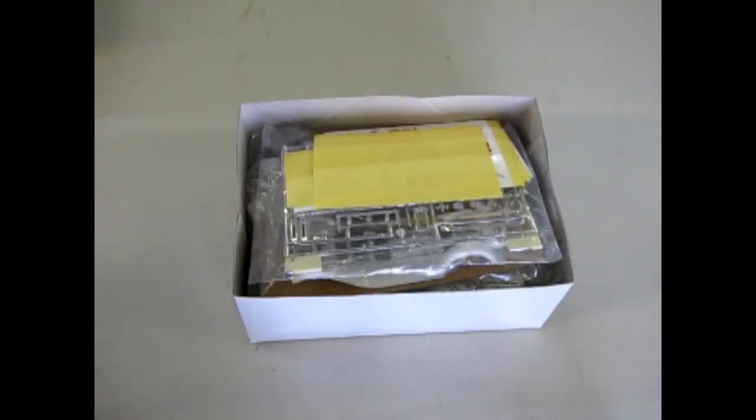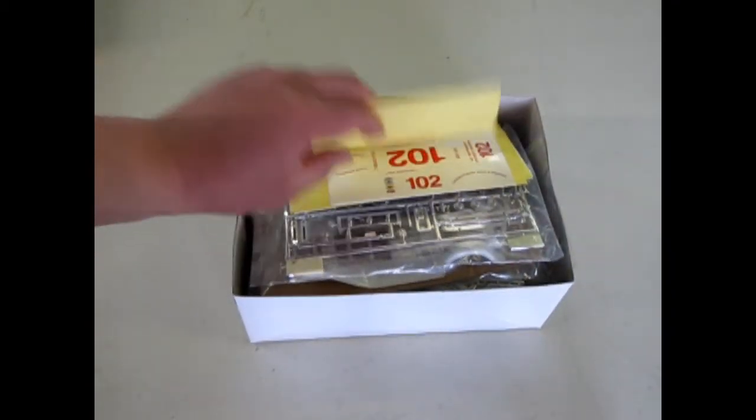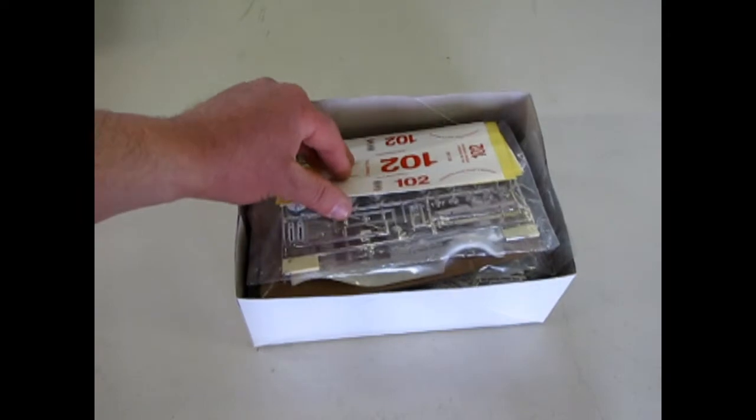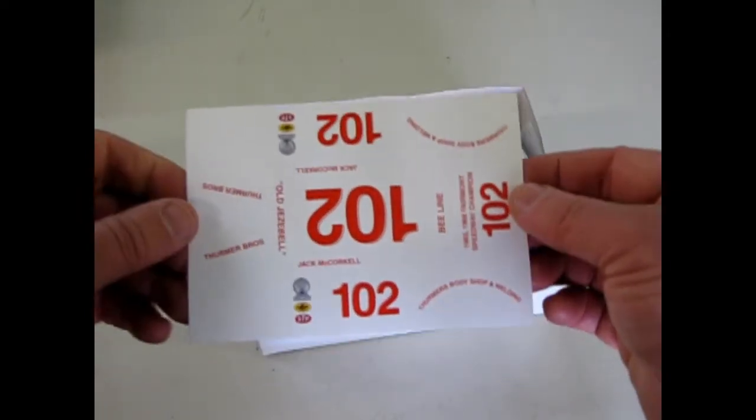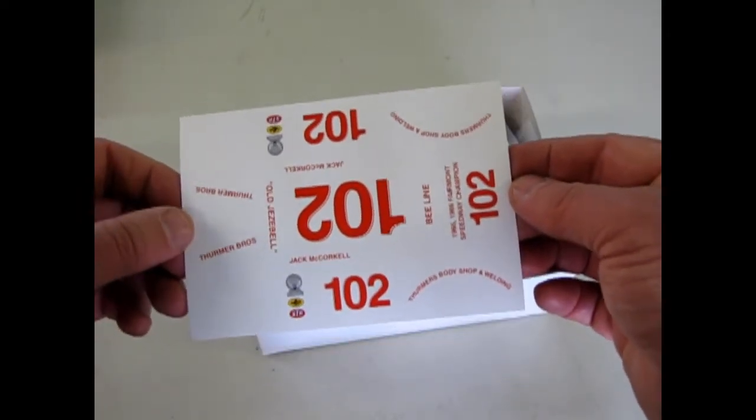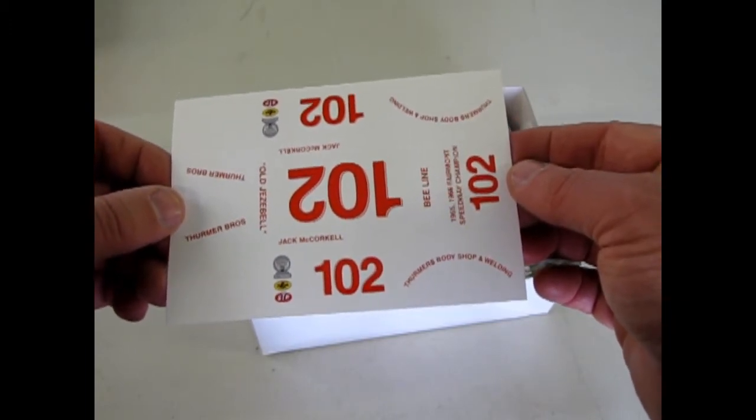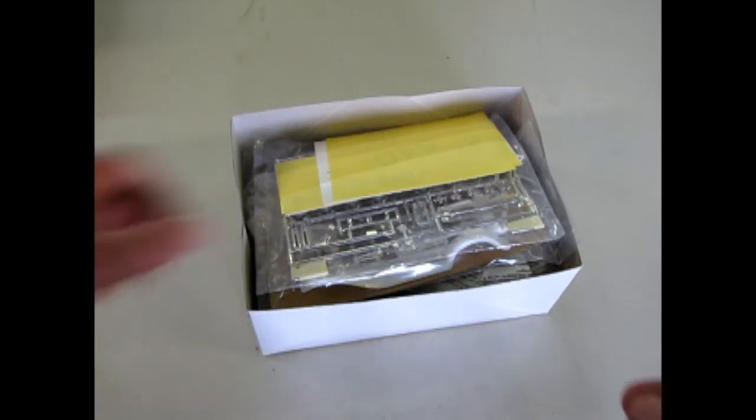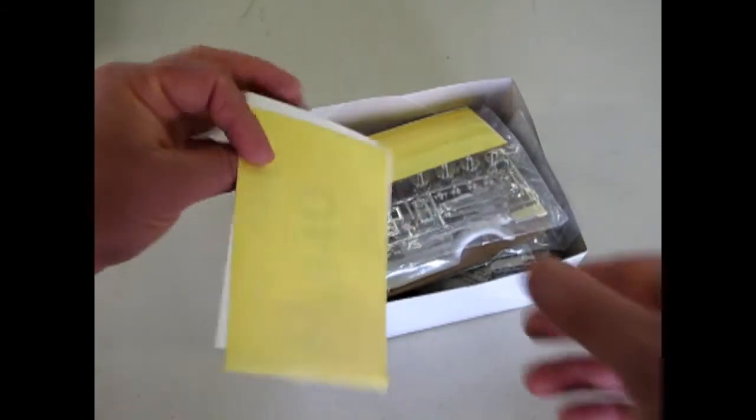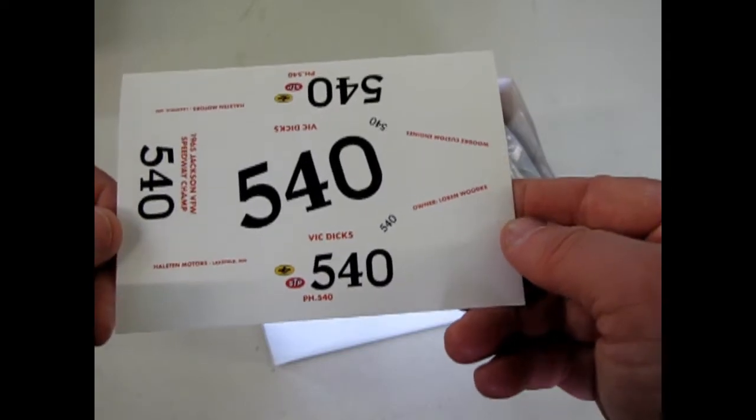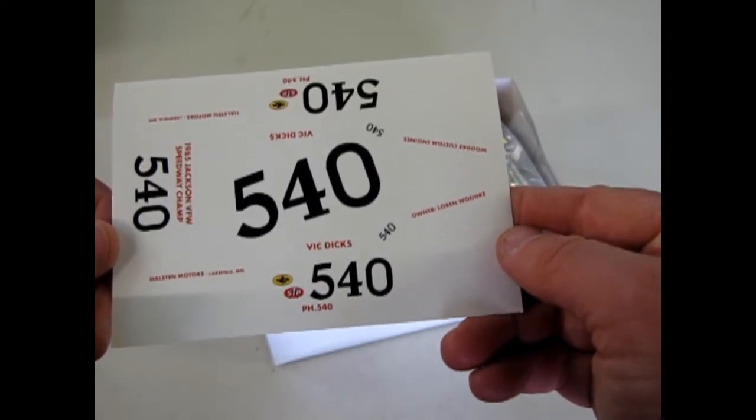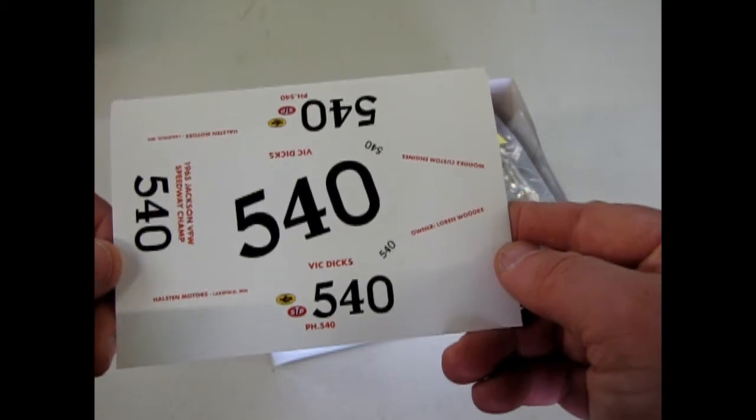And to go along with this, they give you a complete set of stock car decals. Very different ones. There's 102, The Thrummer Brothers. Here is 540, The Jackson VFW Speedway Champ.